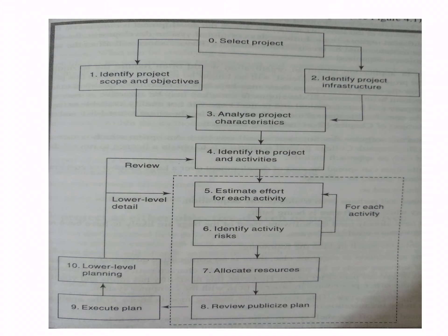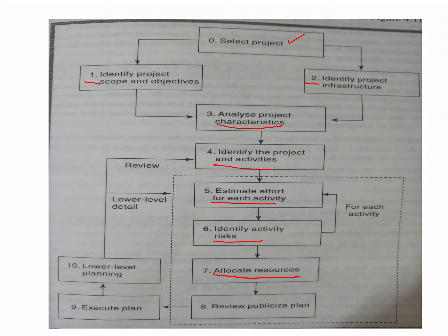This is the flow diagram of the various steps. At the zeroth level you select the project — a company with many projects on hand must choose which one is feasible. Step one: identify project scope and objectives. Step two: identify project infrastructure. Step three: analyze project characteristics. Step four: identify products and activities. Step five: estimate efforts required. Step six: estimate risk, and step seven: allocate the resources accordingly.